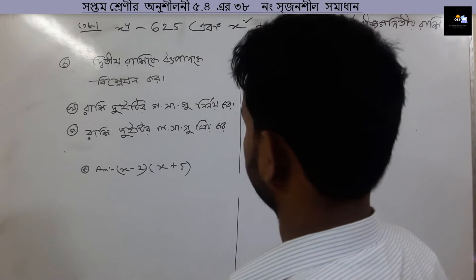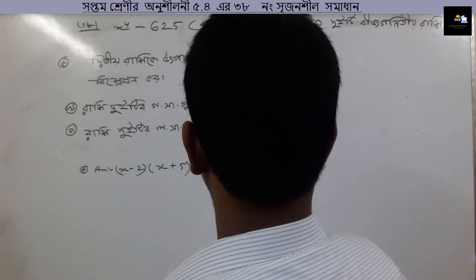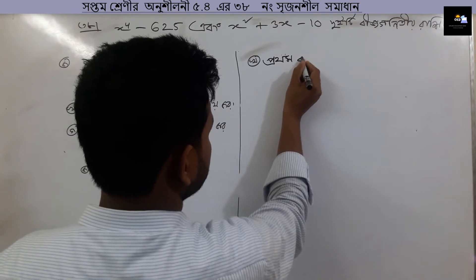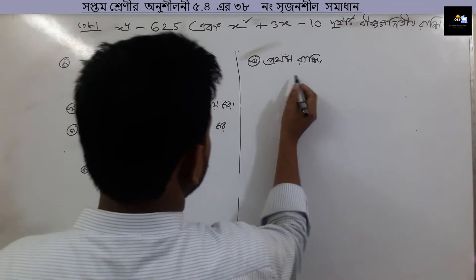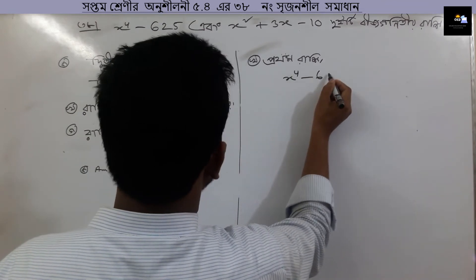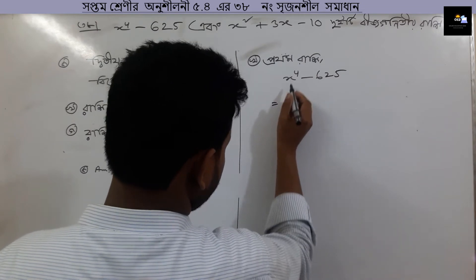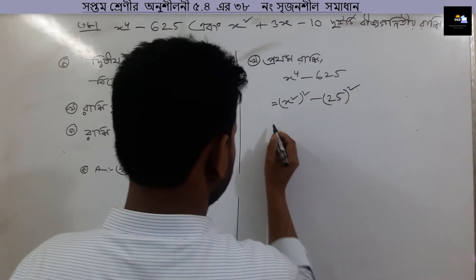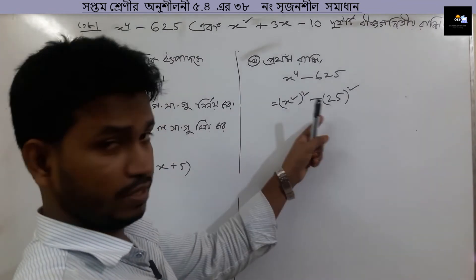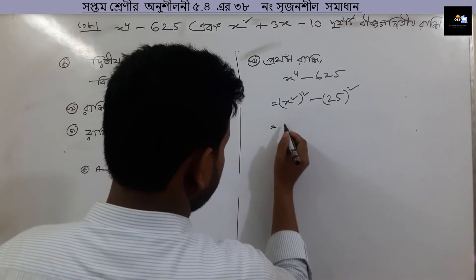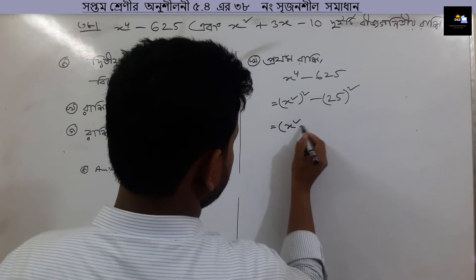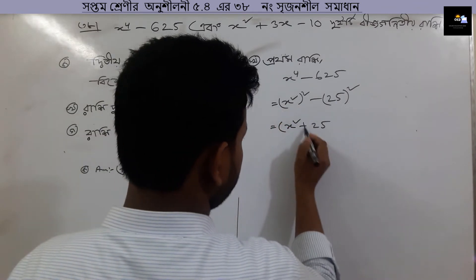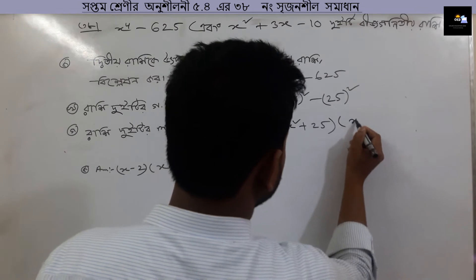We will write x to the power 4 minus 625. We will write x squared and 625. We will write a plus b into a minus b — giving x squared minus 25.